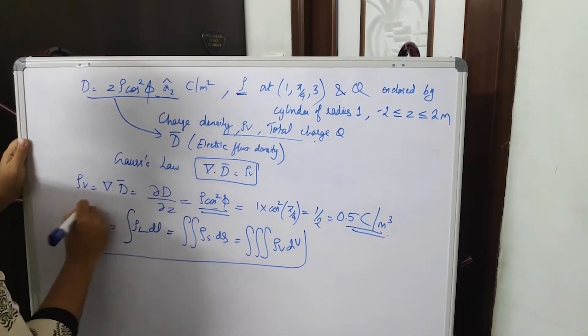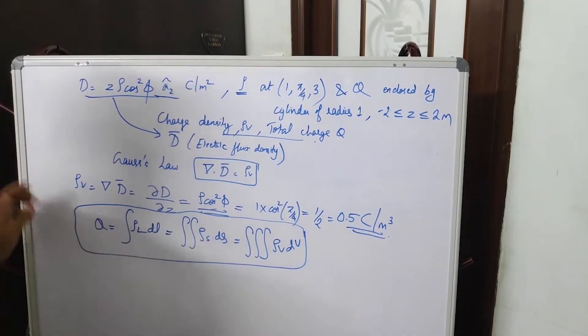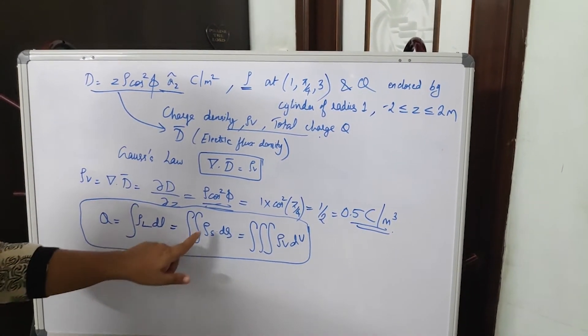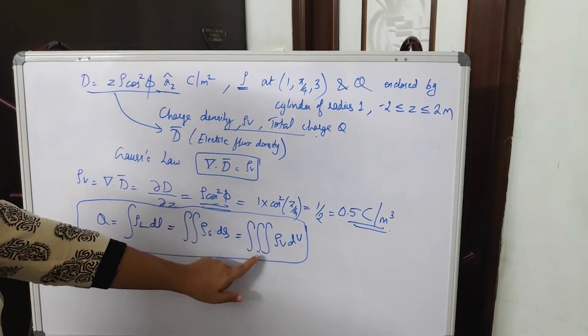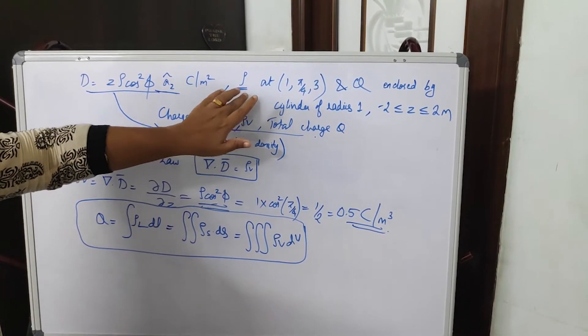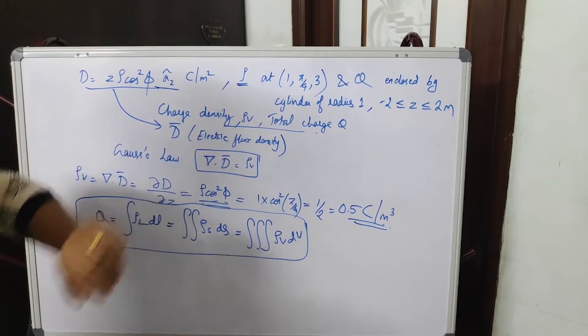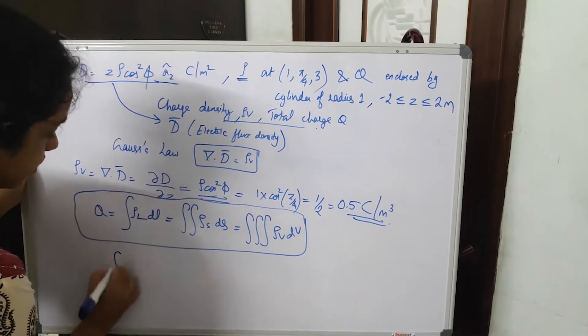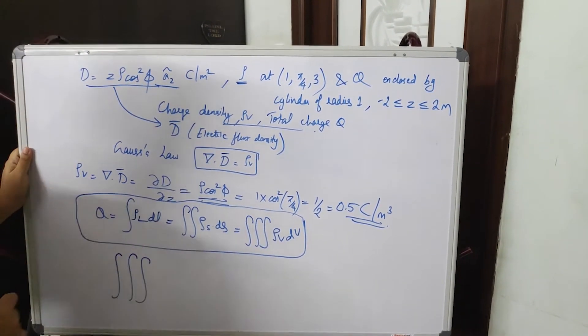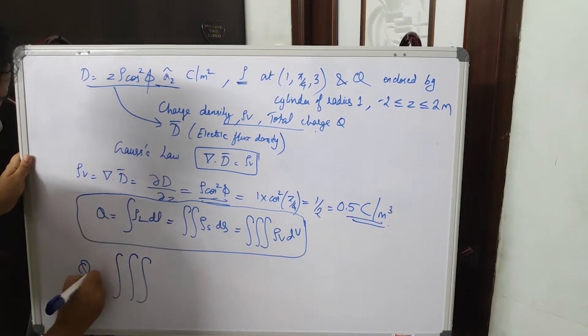All these you can use based on the value you have: rho L DL or rho S surface integral of rho S DS or volume integral of rho V DV. So this is the volume charge density. So you have to calculate volume integral of rho V to get the total charge Q.